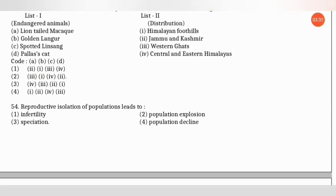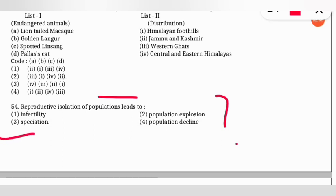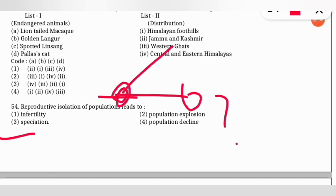The next question: reproductive isolation of a population leads to what kind of change? The correct option is option 3 — speciation takes place when reproductive isolation occurs in a population; that means new species are formed from one species.